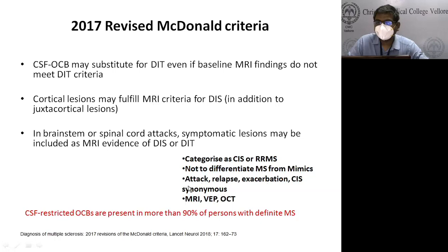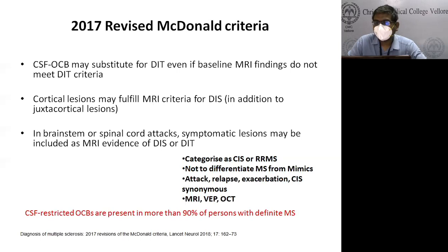The 2017 revised McDonald criteria require dissemination in space and dissemination in time. If criteria for dissemination in time are not met, CSF oligoclonal bands can substitute. A second modification is that cortical lesions may fulfill the MRI criteria for dissemination in space in addition to juxtacortical lesions. Importantly, oligoclonal bands — representing intrathecal antibody production — are present in more than 90% of patients with definite multiple sclerosis.